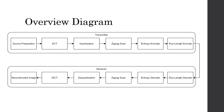Then we will do the run length encoding. When we do the decompression of the image, we just do the reverse and opposite of what the transmitter did. So we will run length decode, entropy decode, take the zigzag scan once more, then de-quantize, take the inverse cosine transform, and then we have the reconstructed image.